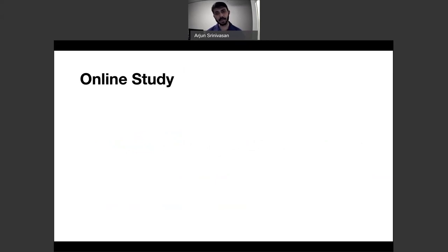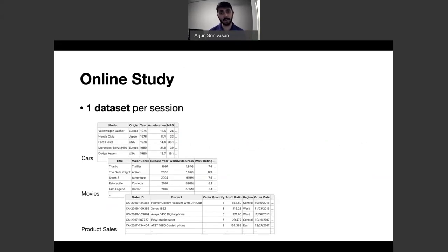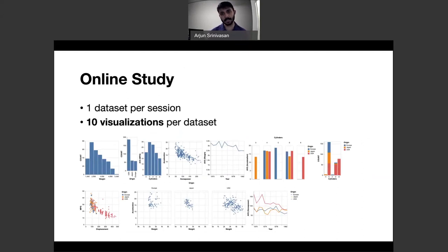To this end, we conducted an online study to collect a corpus of utterances that people used to specify popular data visualizations. For each session, we randomly assigned participants to one of three tabular datasets and presented them with 10 visualizations made using that dataset in random order. In terms of chart types, we covered a range of popular visualizations for tabular data, including bar charts, line charts, scatter plots, and variations of these that covered one to three attributes at a time.